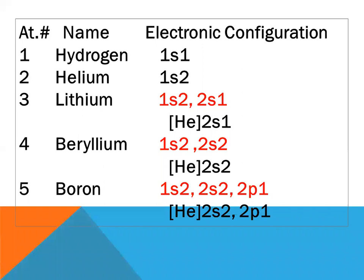Electronic configuration review: hydrogen atomic number one, configuration 1s1; helium atomic number two, configuration 1s2; lithium atomic number three, configuration 1s2 2s1. Instead of writing 1s2, since it is similar to helium, we can write helium in its place. So the configuration of lithium will be [He] 2s1.